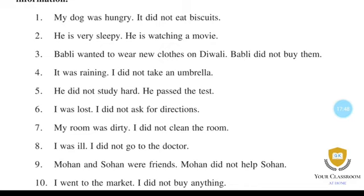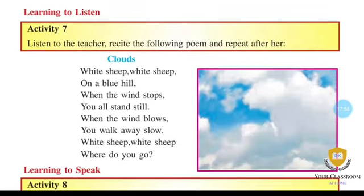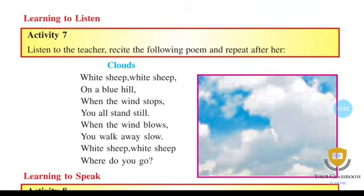Next is Activity 7 - Learning to Listen: Listen to the teacher recite the following poem and repeat after her. 'White shape, white shape on a blue hill. When the wind stops, you all stand still. When the wind blows, you walk away slow. White shape, white shape, where do you go?' Activity 8 - Learning to Speak: Speak the following pairs aloud.